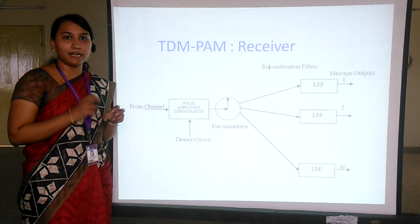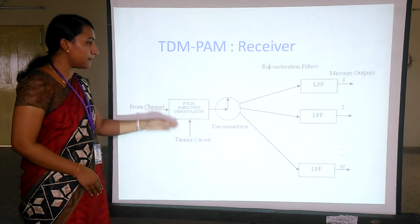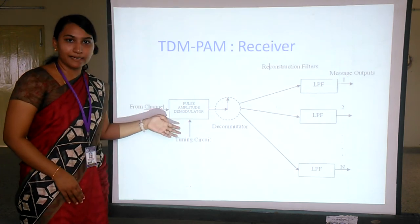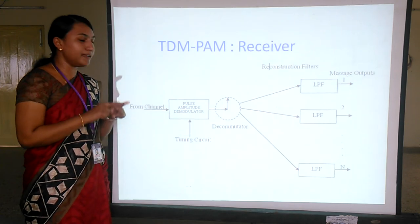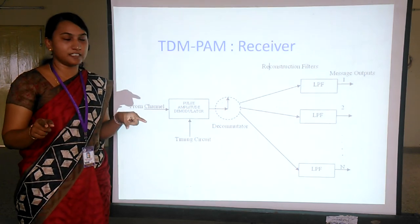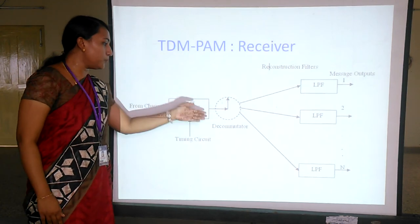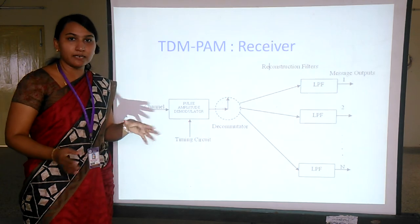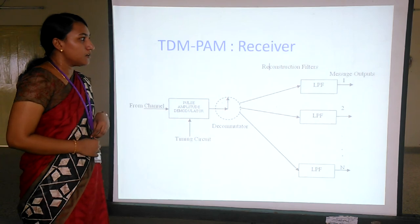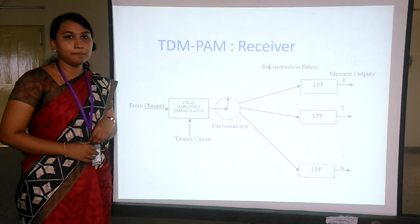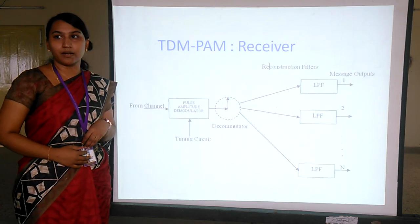At the transmitter end, we multiplex the signal and transmit it over the channel. At the receiver end, it is passed through the demodulator and then the decommutator. The decommutator and the commutator operate in a synchronized fashion — synchronization must be maintained — and the output of the decommutator is distributed to each intended receiver. This is the entire concept of TDM with the application of pulse amplitude modulation.